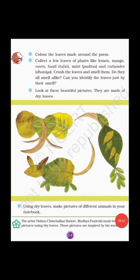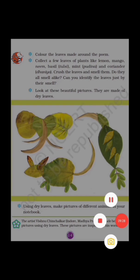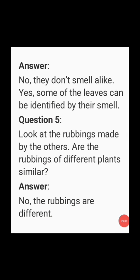Now come to page number 14, see the second question. Collect a few leaves of plants like lemon, mango, neem, basil, mint, and coriander. Crush the leaves and smell them. Do they all smell alike? Can you identify the leaves just by their smell? This is an activity you can do at home. If you smell those leaves, they are not going to smell alike. The answer is: No, they don't smell alike. Yes, some of the leaves can be identified by their smell.